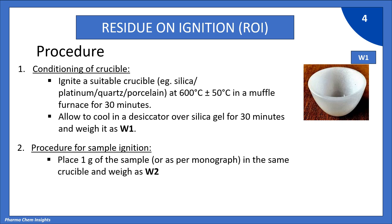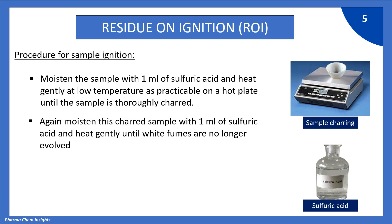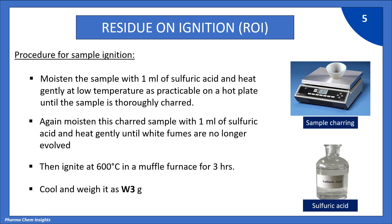Second is the Procedure for Sample Ignition. Place 1 gram of the sample, or as per the monograph, in the same crucible and weigh it as W2. Moisten the sample with 1 ml of sulfuric acid and heat gently at as low a temperature as practicable on a hot plate until the sample is thoroughly charred. Again moisten this charred sample with 1 ml of sulfuric acid and heat gently until white fumes are no longer evolved. Then ignite the crucible at 600 degrees Celsius in a muffle furnace for 3 hours. Remove the crucible from the muffle furnace with the help of tongs, allow it to cool in a desiccator, and weigh it as W3 grams.